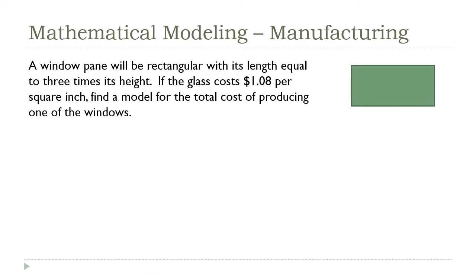In this lecture we're going to continue our discussion of mathematical modeling — coming up with functions or formulas that describe real-world situations. We're going to look at some more practical situations specifically related to manufacturing. I have a scenario here where I have a window pane that's a rectangle, its length is equal to three times its height, and the cost of the glass is $1.08 per square inch. I want to find a model for the total cost of producing one of these windows.